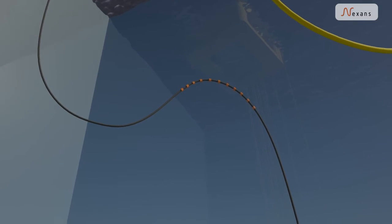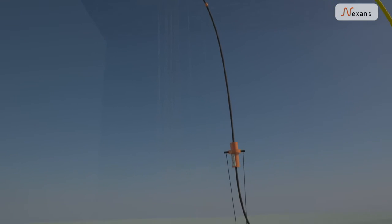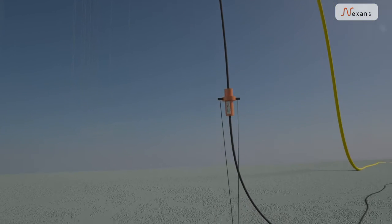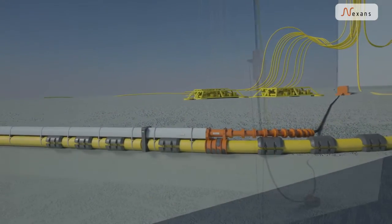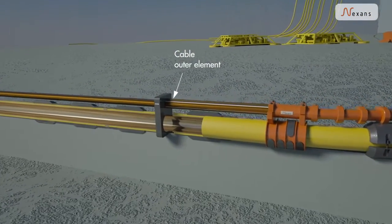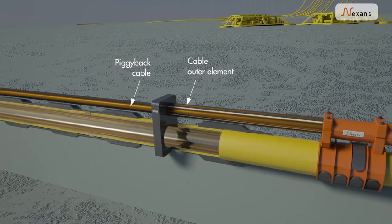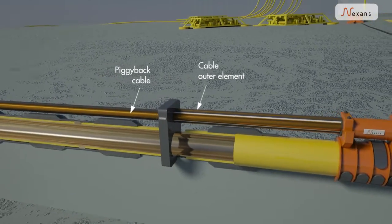A high voltage riser cable is led down to a subsea junction box and further on to the pipeline near end. Here, the riser cable's outer element is connected to the pipeline. The central core of the riser cable is connected to a piggyback cable, which is strapped on top of the pipeline.